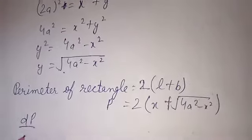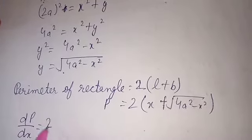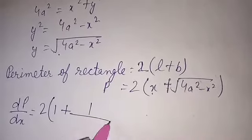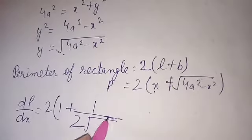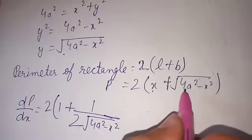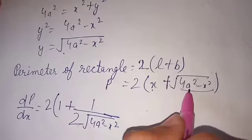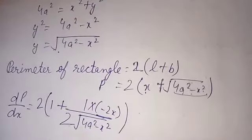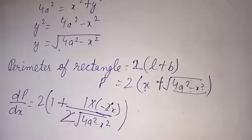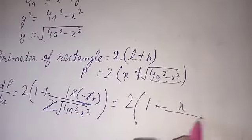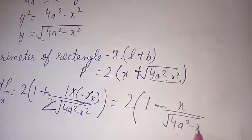So dP/dX = 2 into [differentiation of X is 1, plus differentiation of √(4A² − X²) which is 1/(2√(4A² − X²)) times (−2X)]. Simplifying, we get dP/dX = 2 times [1 − X/√(4A² − X²)].